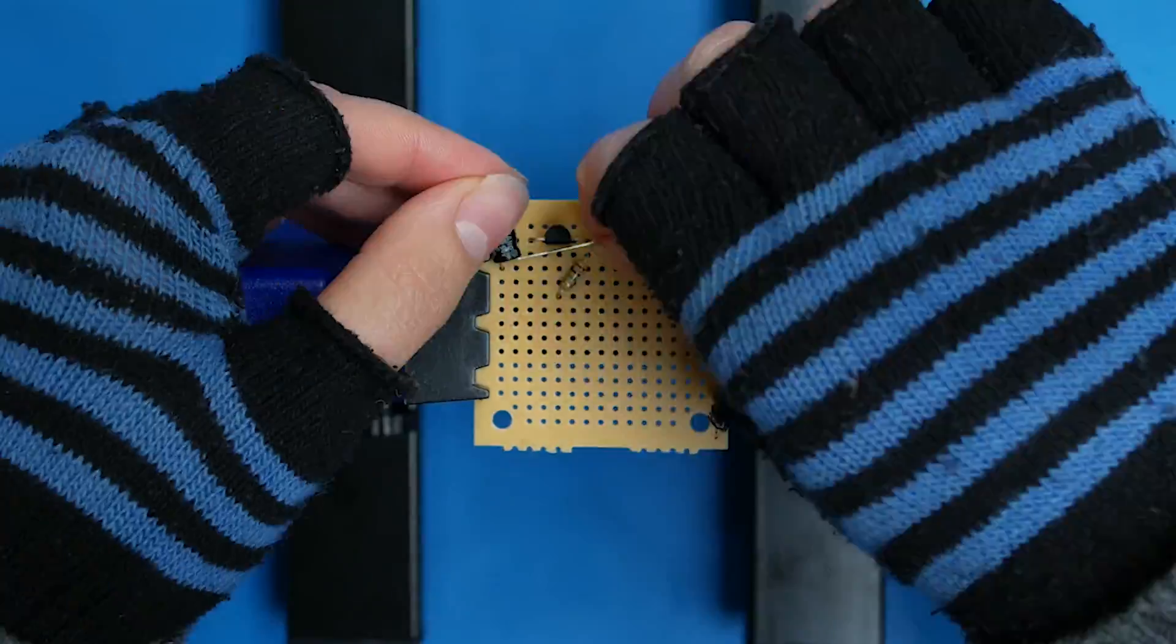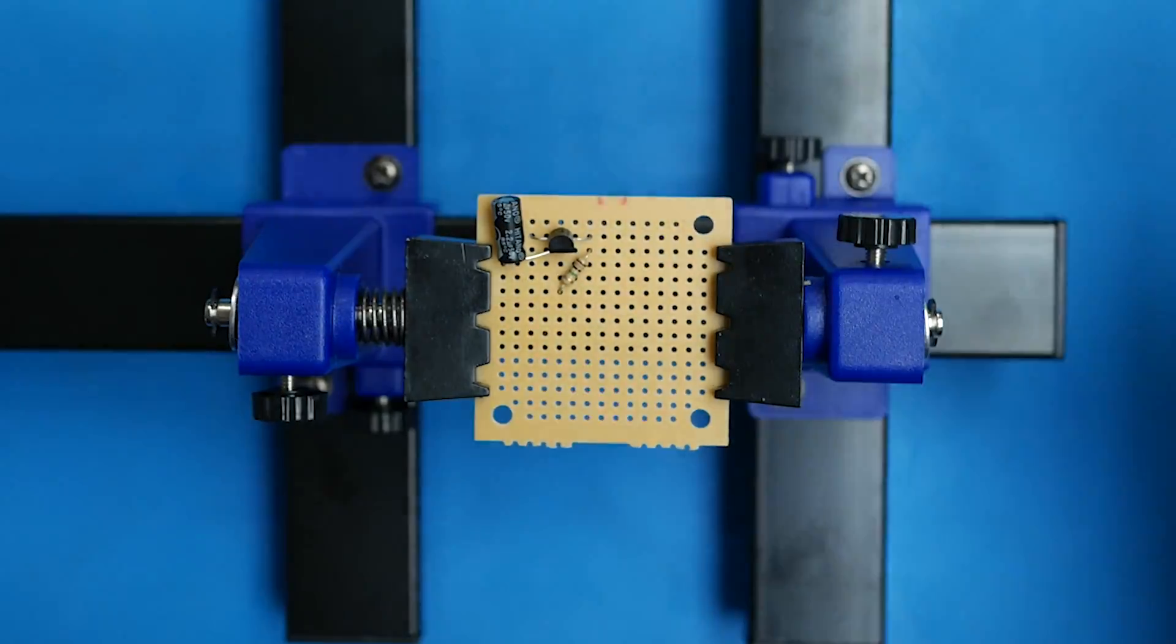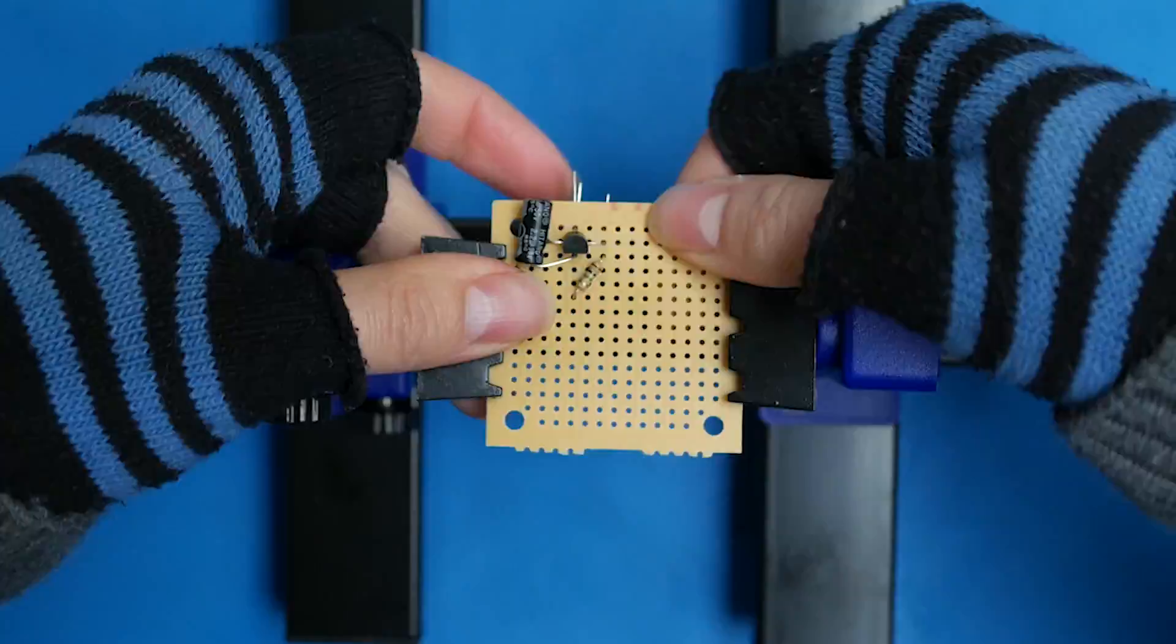To start, you're going to place your first MOSFET, the first 1 megaohm resistor, and the capacitor.